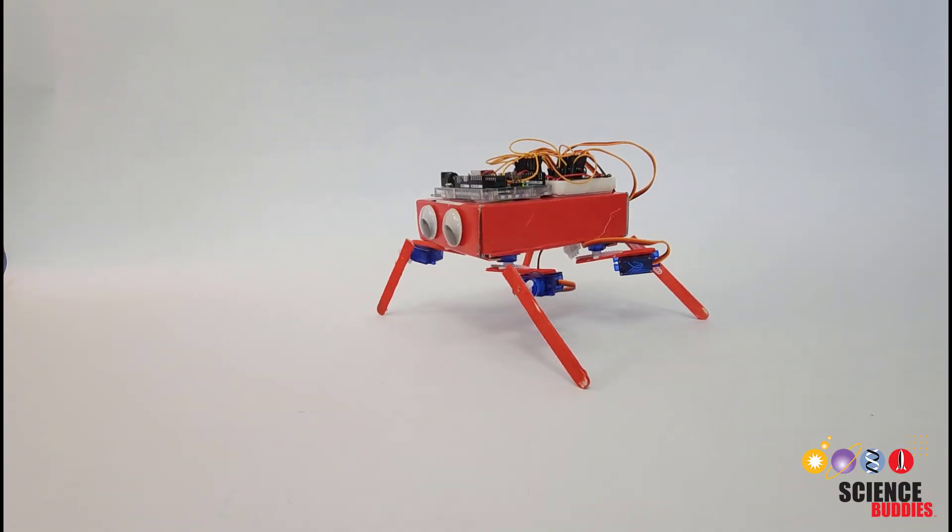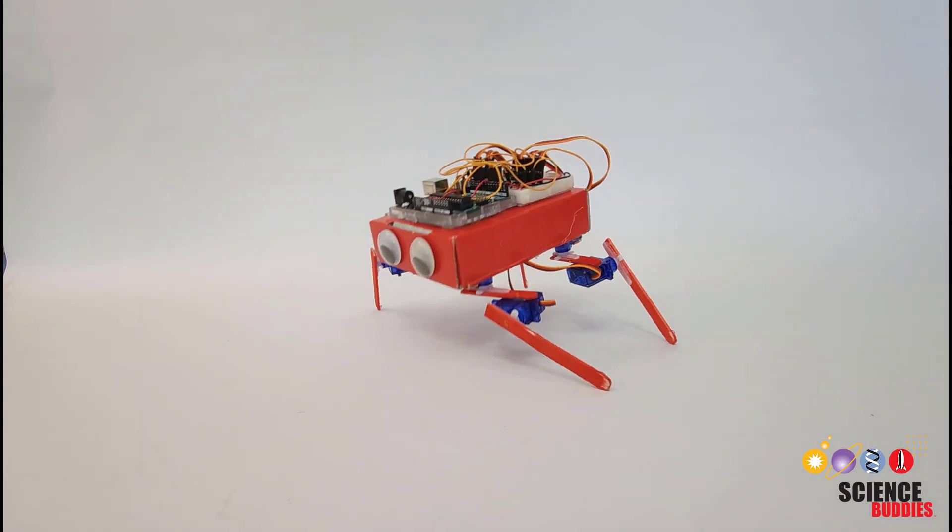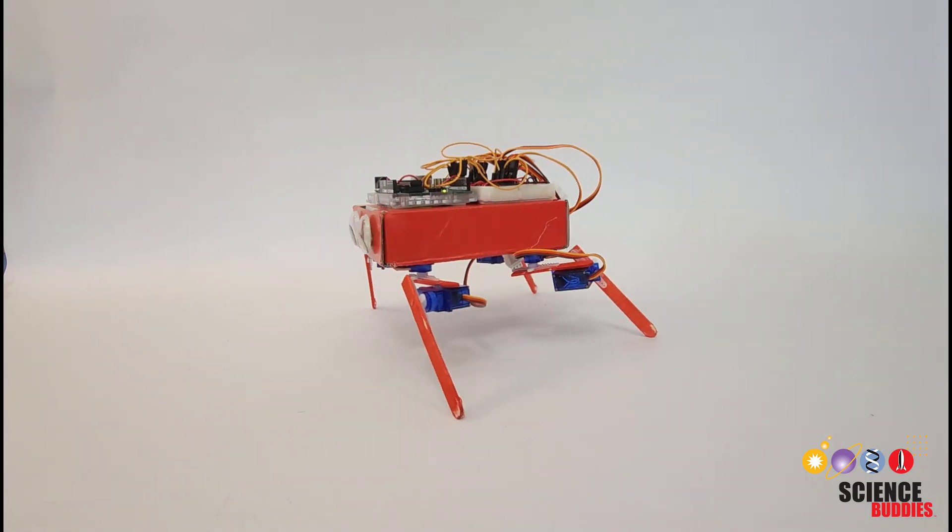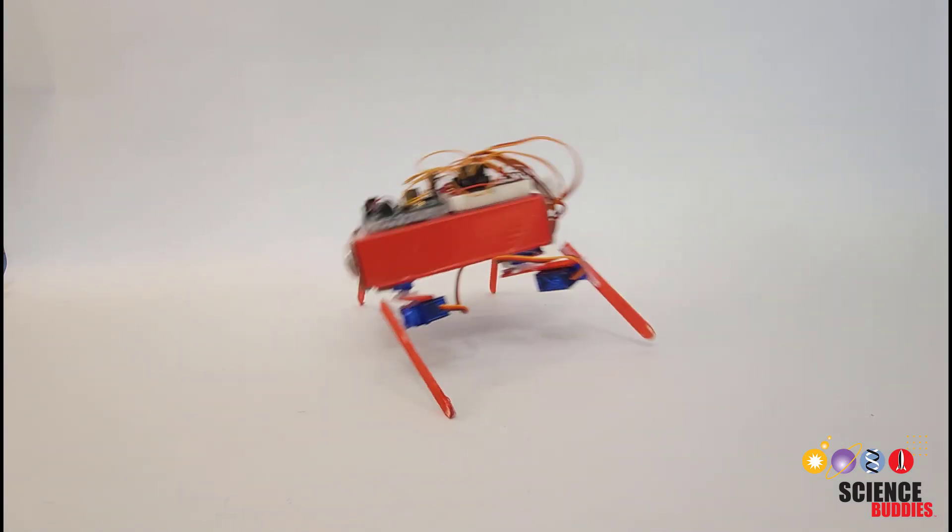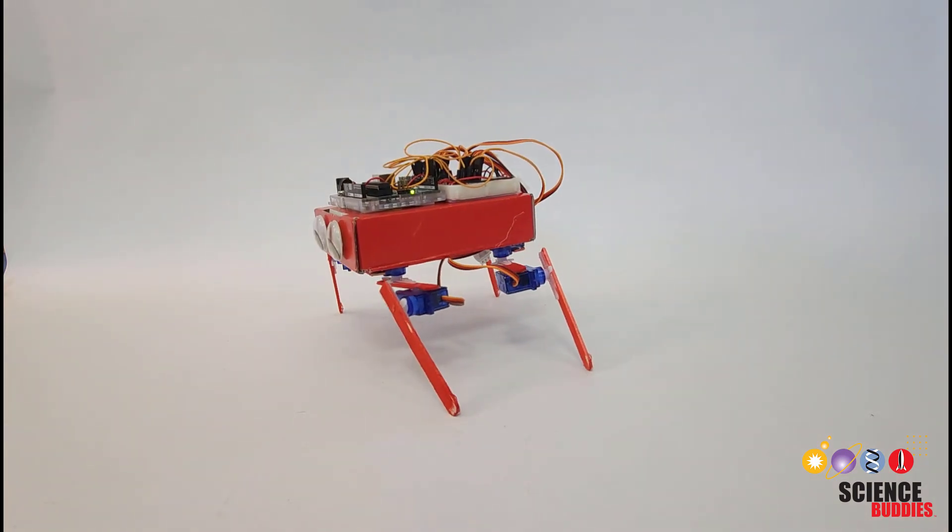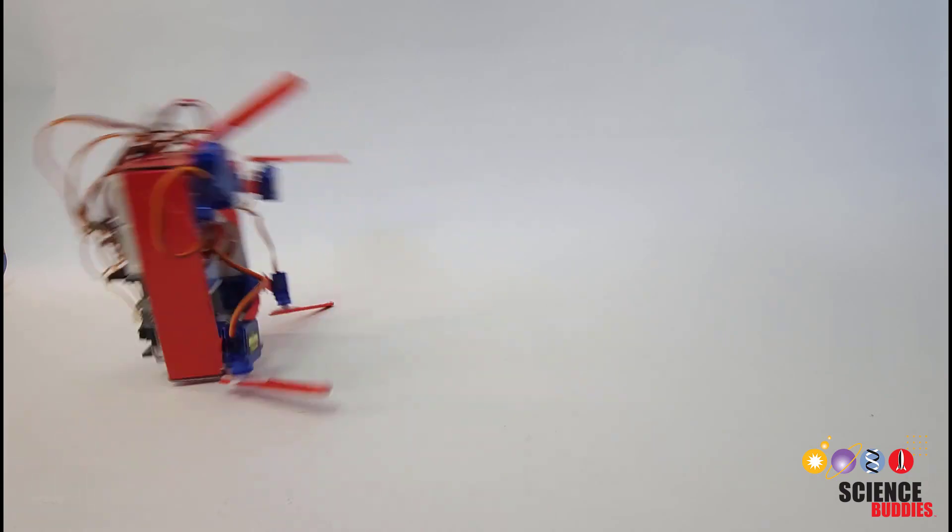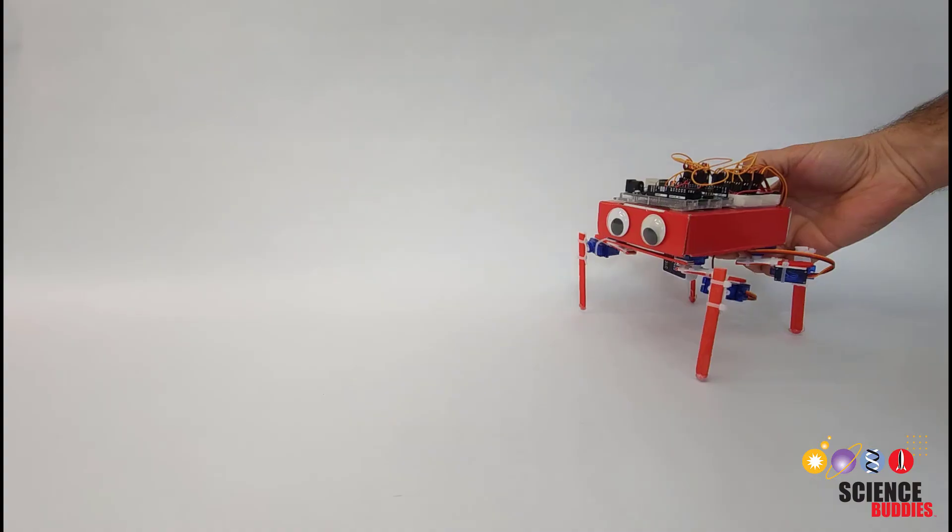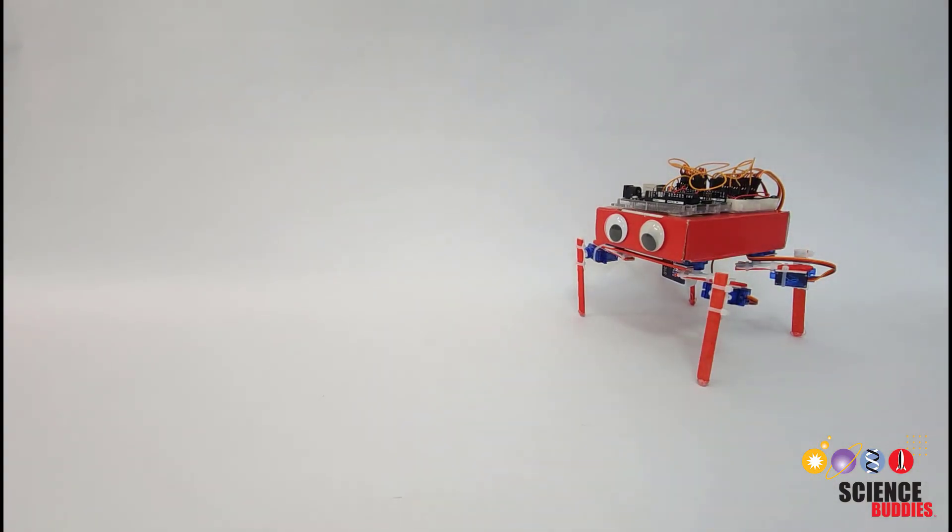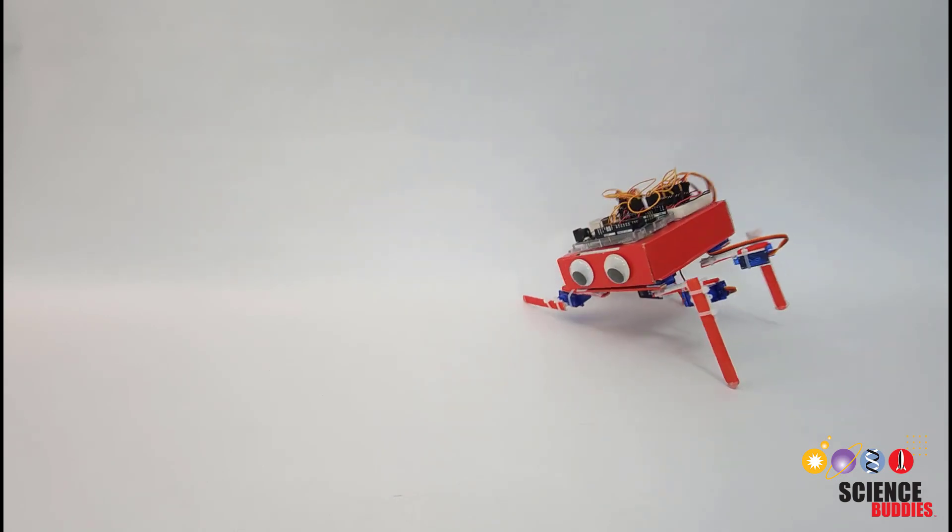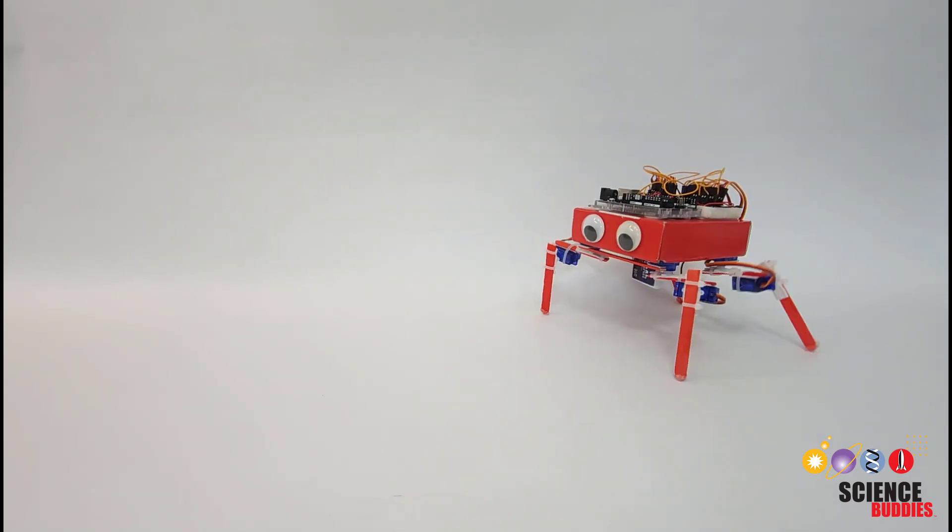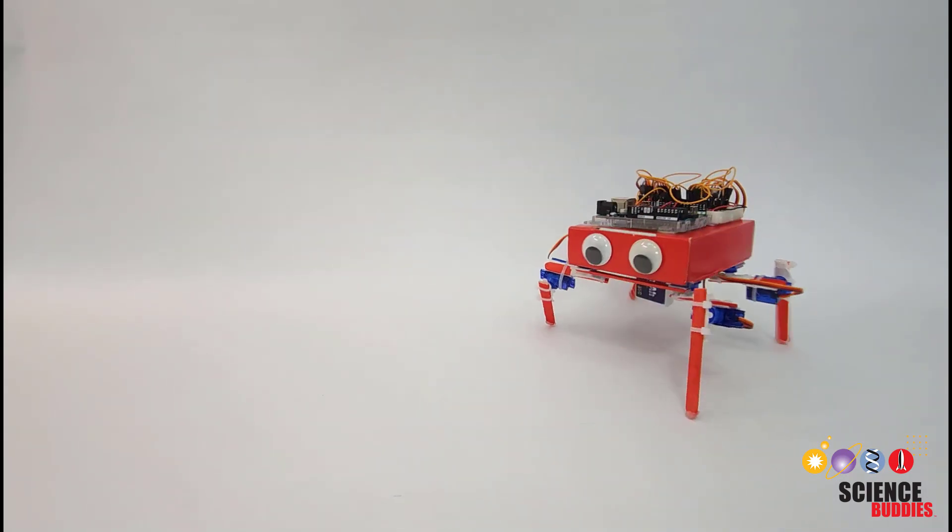In addition to trying out different gaits you can also think about the mechanical design of your robot such as changing the length or spacing of the legs, the material and friction of the feet, or adjusting the stiffness or weight of the body so the robot can better support its own weight. If you're having a lot of trouble getting a quadruped to walk you can consider adding two more legs to make a hexapod which makes it easier to maintain a stable support tripod.